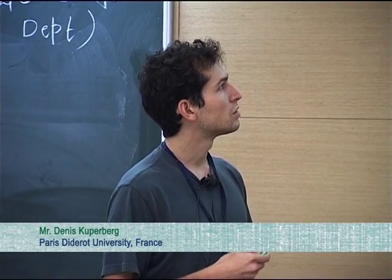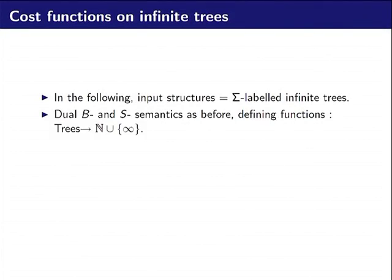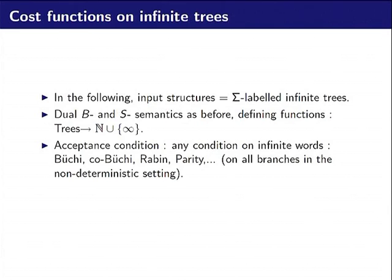Now we will be interested as input structure by sigma-labeled infinite trees, which is a particular case of cost function. As before, we can define dual B and S semantics, but now they define the cost function from trees to N union infinity. We can put any acceptance condition that we want on infinite trees, so it could be Büchi, co-Büchi, or anything that works on infinite words.